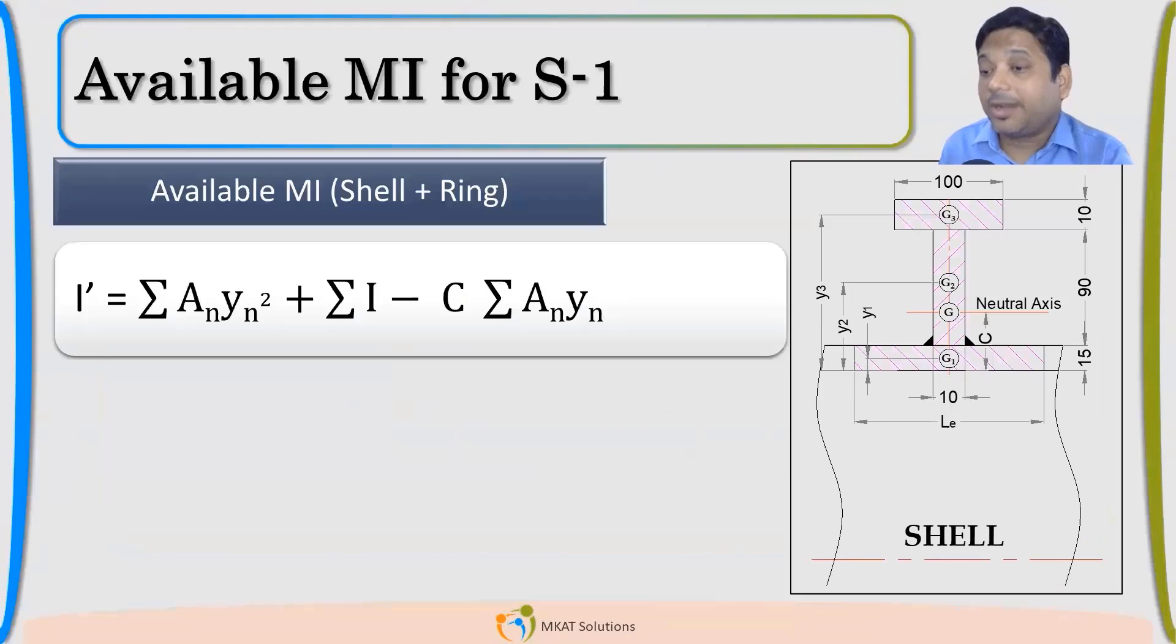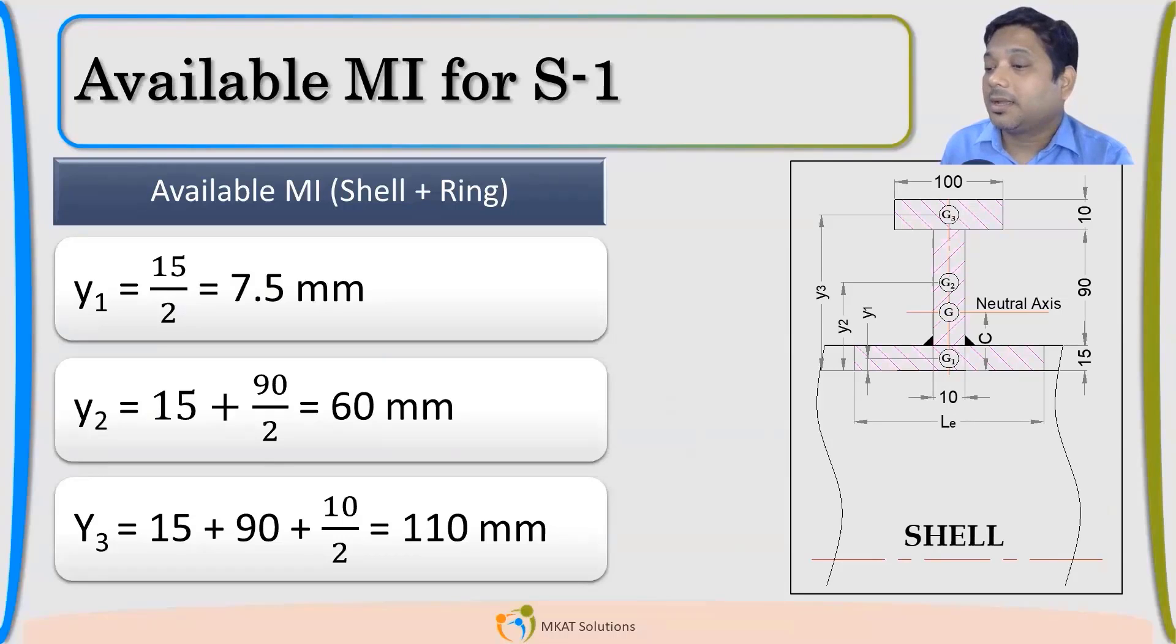First, let us calculate and see what we are getting. There are three areas. I will use this equation. Find out each and every term. Y1, 15 mm is the thickness. We are taking from this ID of the shell. Y1, 15 by 2, 7.5. Y2, add the mid part, 19 divided by 2 plus 15, 60 mm. This is simple. Y1, Y2, Y3. You can do the calculations. Once we have this Y1, Y2 and Y3.